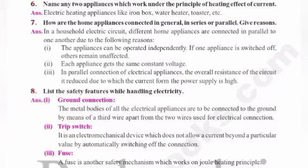Each appliance gets the same constant voltage. In parallel connection of electrical appliances, the overall resistance of the circuit is reduced, due to which the current from the power supply is high. These are the reasons home appliances are connected only in parallel.